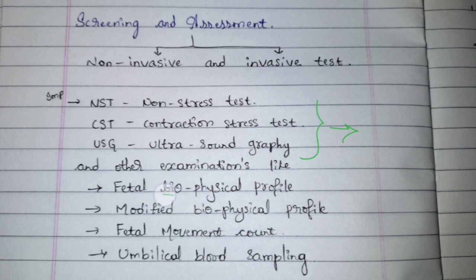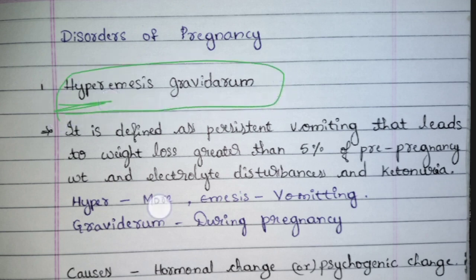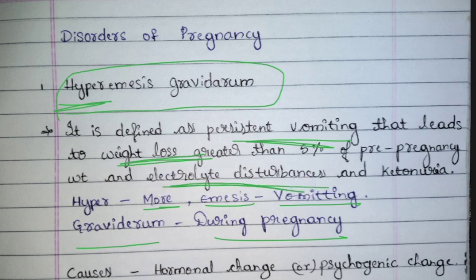At the time of pregnancy there is one condition seen very frequently in pregnant women — that is hyperemesis gravidarum. Hyper means more, emesis means vomiting, gravidarum means during pregnancy. Many women undergo excessive vomiting, and because of this there will be weight loss, water and electrolyte imbalance, and even ketonuria.